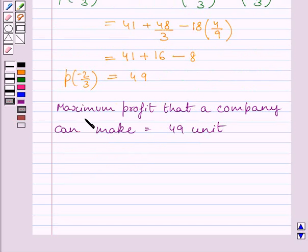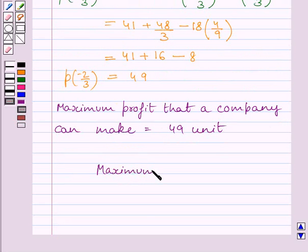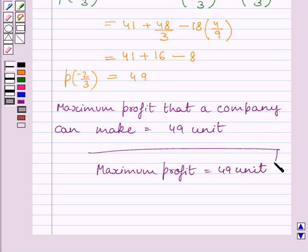Simplifying, we get P(minus 2 upon 3) equal to 49. So the maximum profit that a company can make is equal to 49 units. Our required answer is: maximum profit is equal to 49 units. This completes the session. Hope you understood the session. Take care and keep learning.